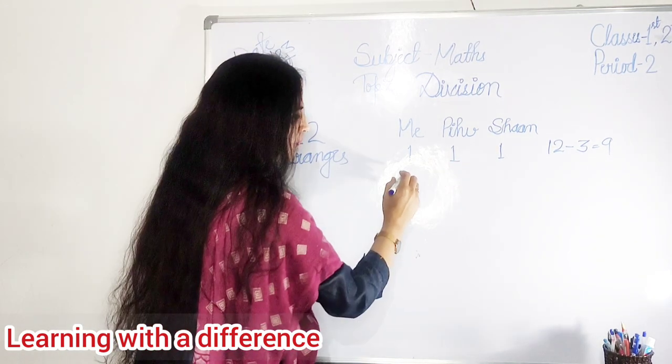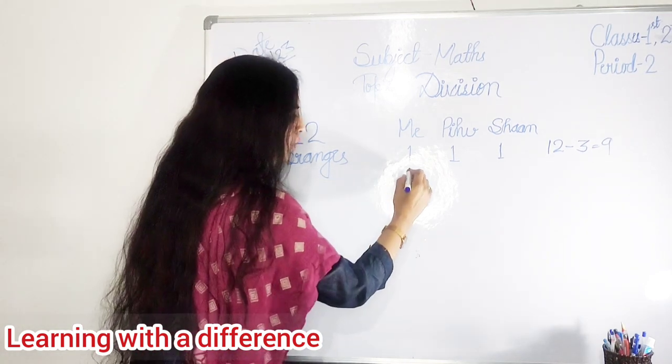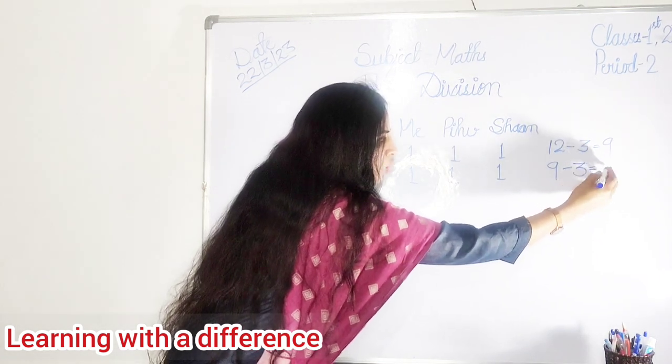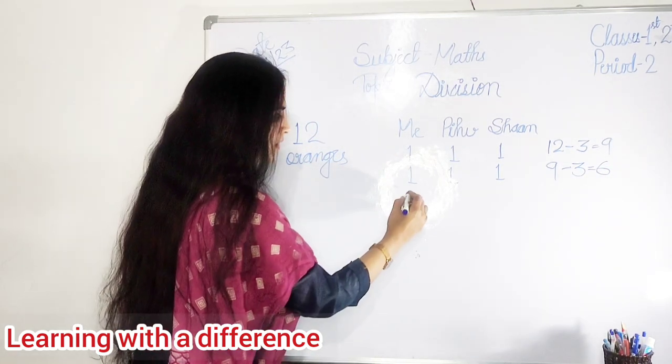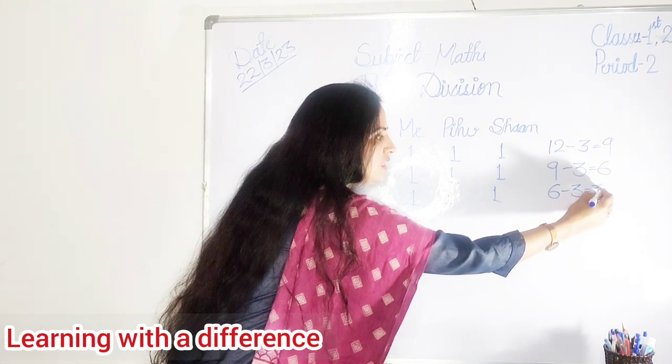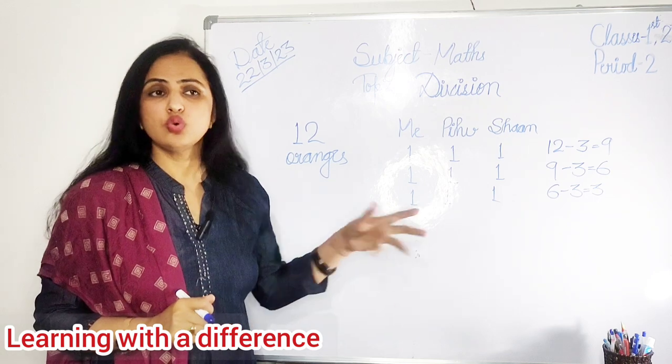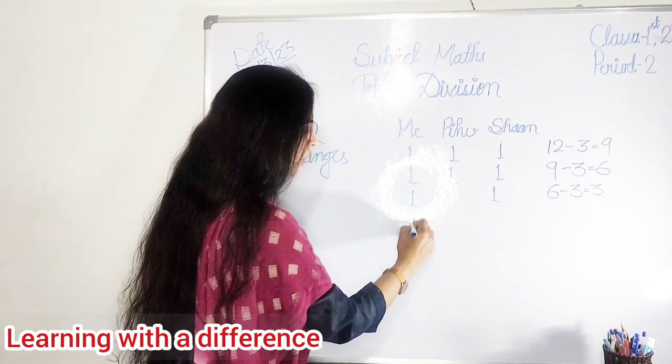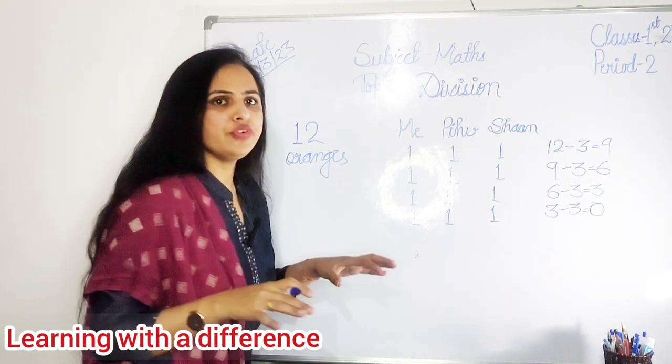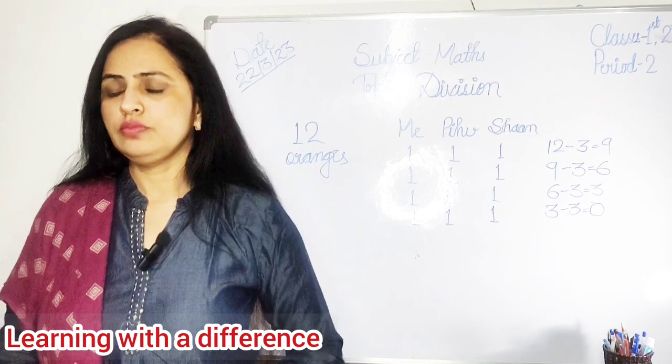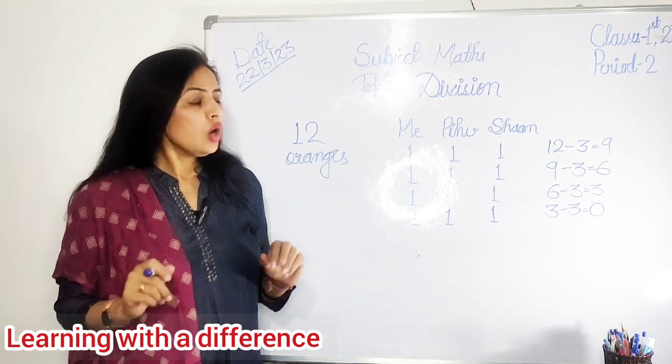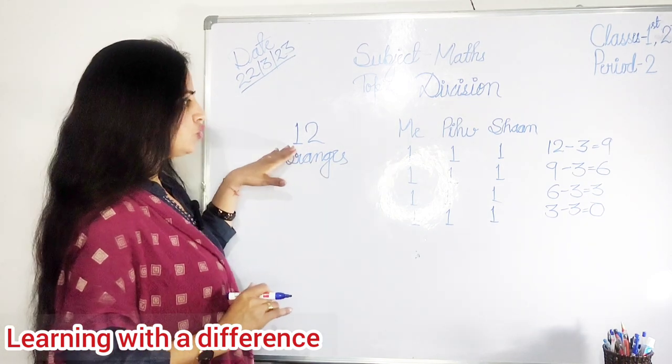Again I repeat, we repeat it. Nine - one ma'am, one Peehu, one Shaan. Then nine minus one, two, three, how many oranges left? Very good, six. Again one ma'am, one Peehu, one Shaan. So how many left? Six minus three, it is three. Easy na divide karna? Yes, it was so simple. Again out of three oranges, one me, one Peehu, one Shaan. So three minus three. Then we finished all the oranges. We got equal oranges. So how many oranges sabko barabar barabar mile? See, ab chalo se yahan dekho. Total oranges were? Twelve.